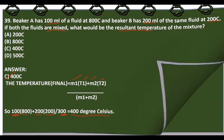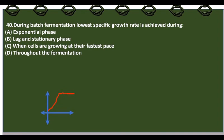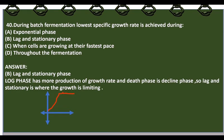During batch fermentation, the lowest specific growth rate is achieved during? The answer is B, lag and stationary phase. There are 5 phases: lag phase, log phase, deceleration phase, stationary phase, and death phase. The lag phase and stationary phase are growth-limiting phases. The log phase has the highest growth rate, and the death phase is the decline phase. So lag and stationary phase are the answer.